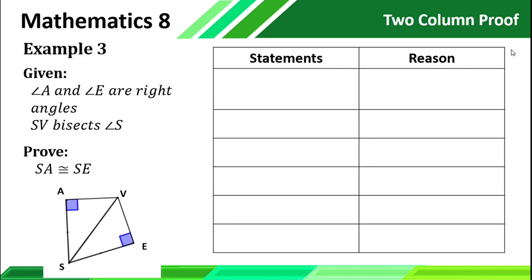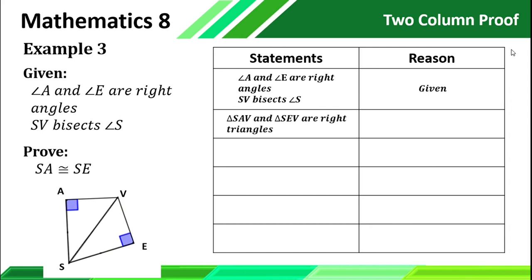For example number 3: given that angle A and angle E are right angles, and SB bisects angle S — prove that SA is congruent to SE. First, we need to prove that our triangles are congruent, and then on the last part of our proof, we can use CPCTC. We copy our given on our statement and put 'given' as the reason. If angle A and angle E are right angles, automatically triangle SAB and triangle SEB are right triangles, by the definition of right triangles.